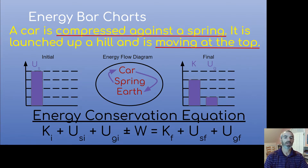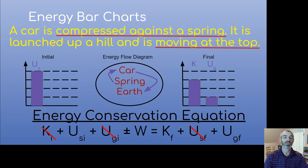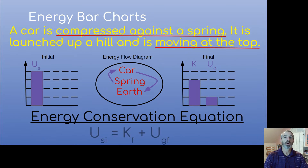We write our long conservation equation — all the mechanical energies plus or minus work equals all the mechanical energies in the final. We cross out kinetic energy and gravitational in the initial, and keep only the stored spring energy. Then we ask about work: are there any arrows going from outside in or inside out? The answer is no, so we cross out work as well. That simplifies our equation down to stored spring energy initially equals final kinetic energy plus final gravitational energy.